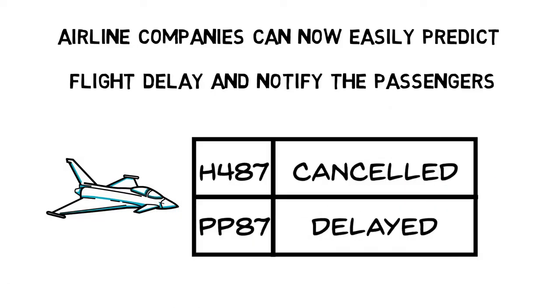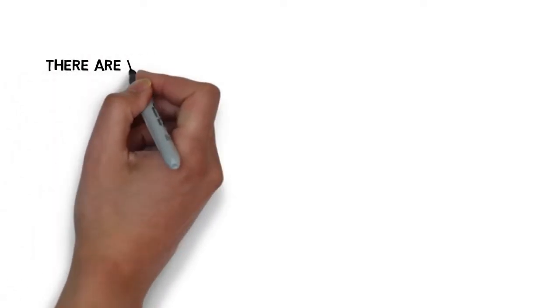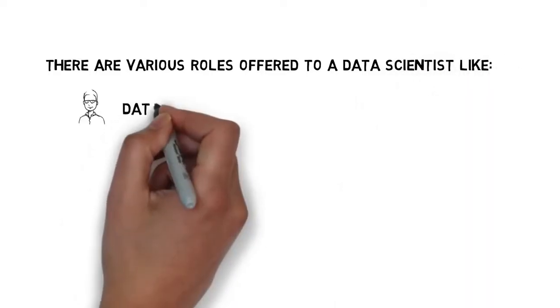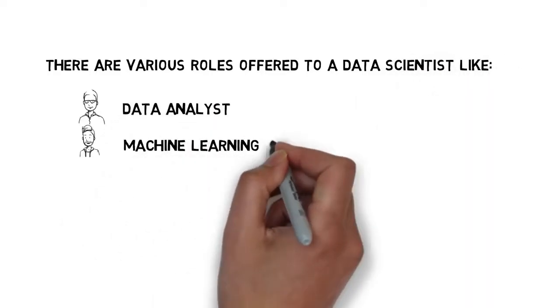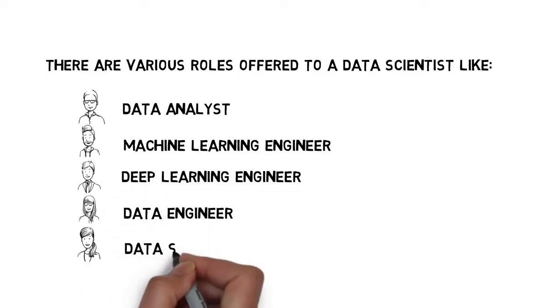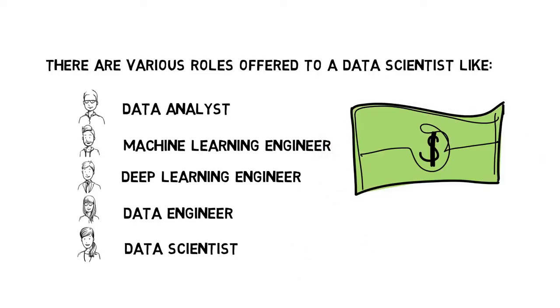There are various roles offered to a data scientist like data analyst, machine learning engineer, deep learning engineer, data engineer, and of course data scientist. The median base salaries of a data scientist can range from $95,000 to $165,000.